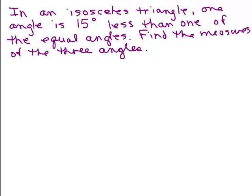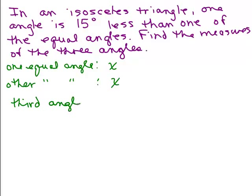So here's a problem involving an isosceles triangle. In an isosceles triangle, one angle is 15 degrees less than one of the equal angles, find the measures of the three angles. So we don't know any of the angles here, so we have to define all of them. So let's say we've got one of the equal angles, let's call it x, and then the other equal angle would then also be x, right? And what would be the last angle? I'll call it the third angle. This is the one that is not one of the equal angles.